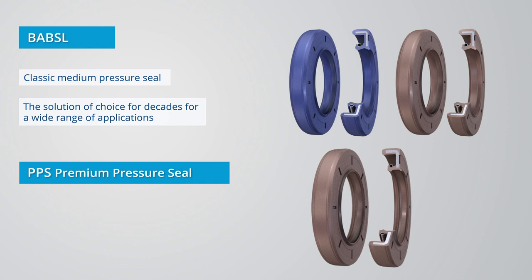The PPS, on the other hand, is also suited for permanent use above 1.5 bar housing pressure and for higher speed levels.